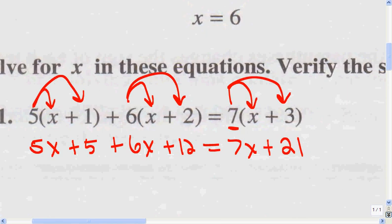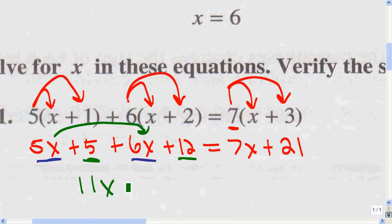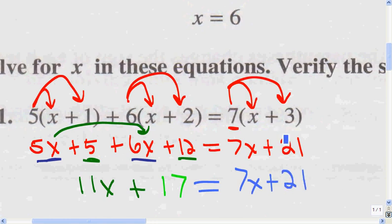Now we're going to combine all the like terms — all the x's and all the knowns. I like to combine first because I think that's easier. The 7x and the 6x are the same type, and the 5 and the 12 are whole numbers. So we combine the 6x and the 5x to get 11x, and we combine the 5 and the 12 to get 17, giving us 11x + 17 = 7x + 21. There's nothing to combine on the right side, so that stays the same.